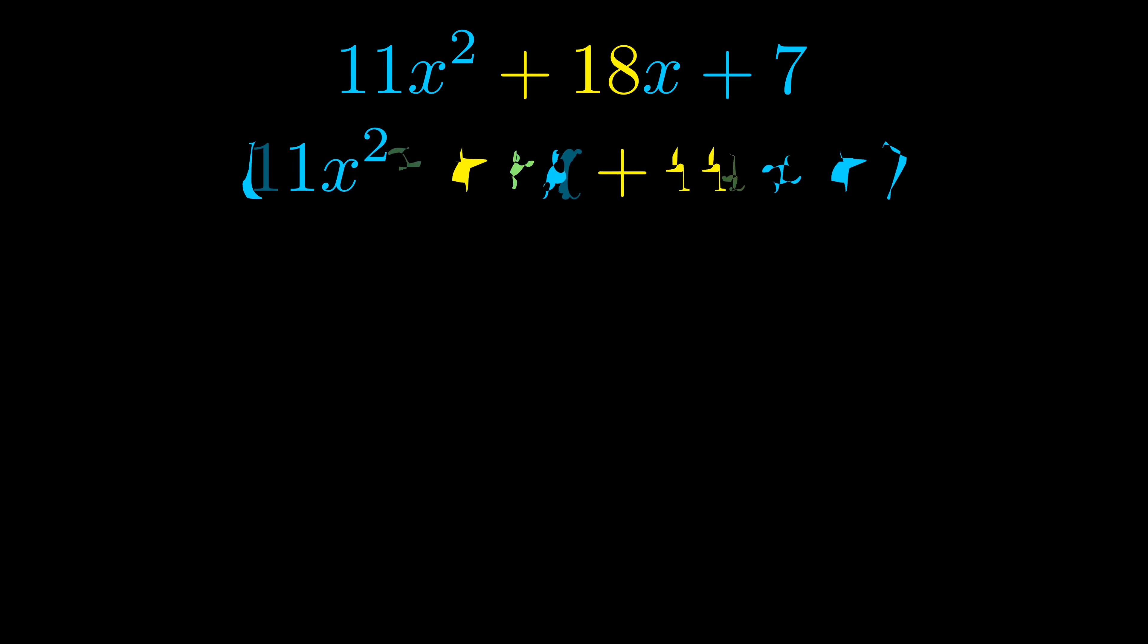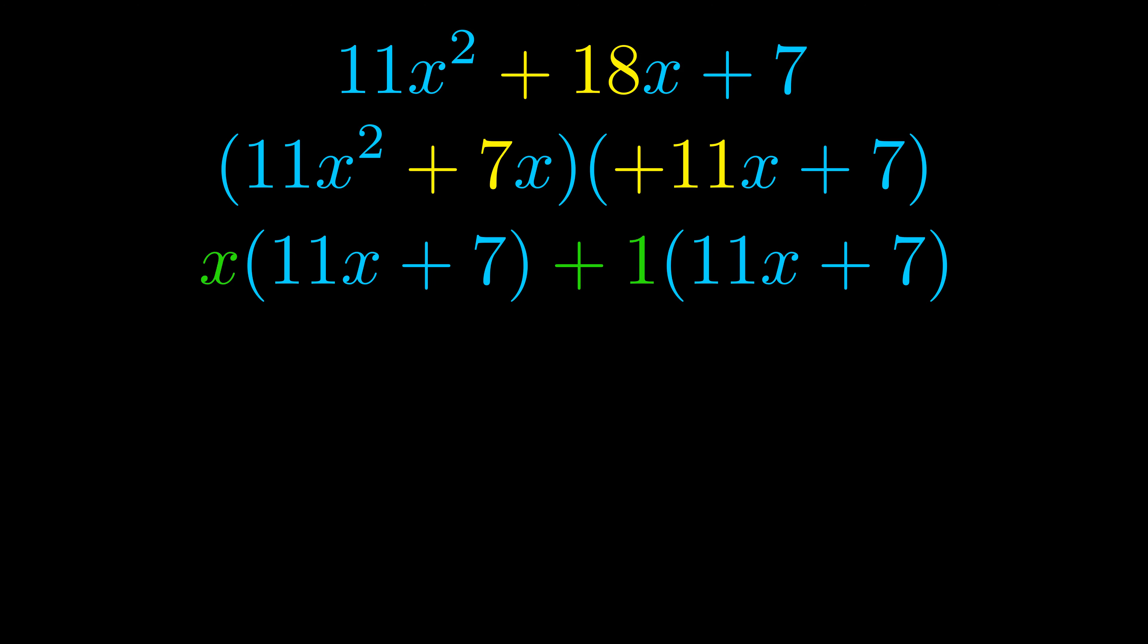Once we've done this we go ahead and we put parentheses around the first term in the last term and we do that so that we can take the greatest common factor out of both terms. We can see the greatest common factor is now outside in green.